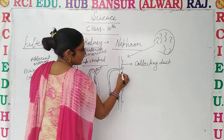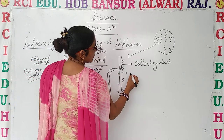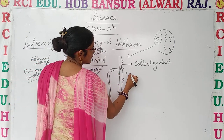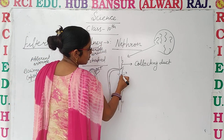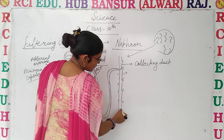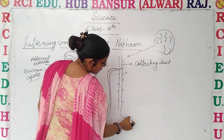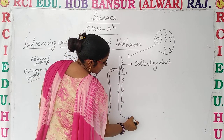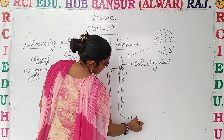The waste is collected in the collecting duct. From the collecting duct, the waste is passed into the ureter.